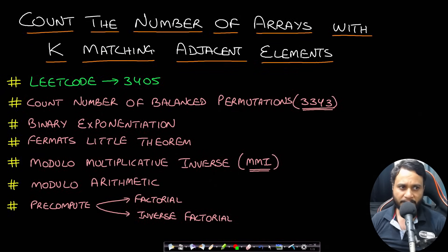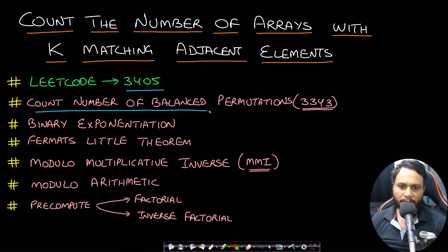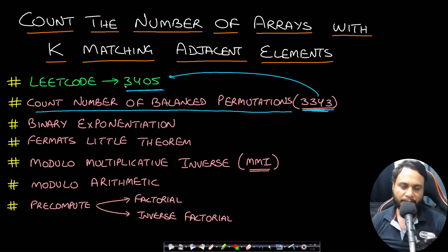Hello guys, welcome back to TechDose. In this video we will look at 'Count the Number of Arrays with K Matching Adjacent Elements', which is LeetCode number 3405. There are a lot of prerequisites for this problem, but if you have already solved 'Count the Number of Balanced Permutations' from 3343, then you will be able to solve this, because 3343 has all the concepts needed to solve 3405.